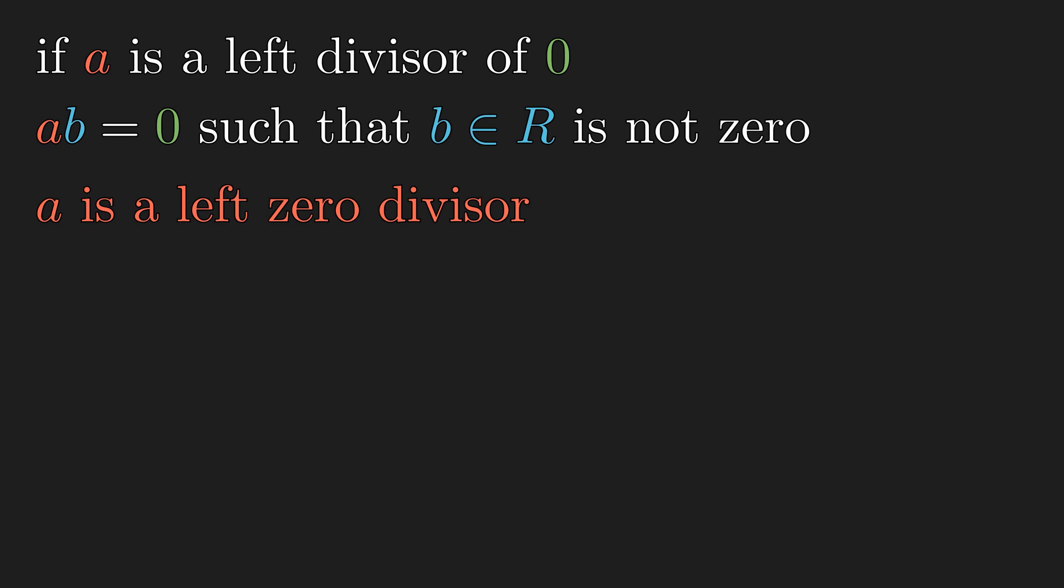And we can come up with a similar definition for the right 0 divisor. To provide an example, the red matrix is a left 0 divisor, since you can find the non-zero blue matrix that right multiply to 0. And this red matrix is a right 0 divisor as well. In fact, every singular matrix in the matrix ring are both-sided 0 divisors.